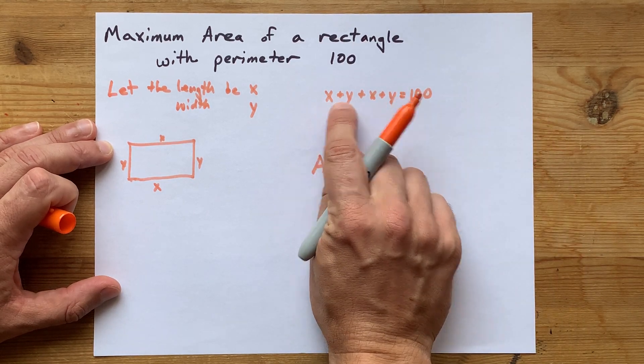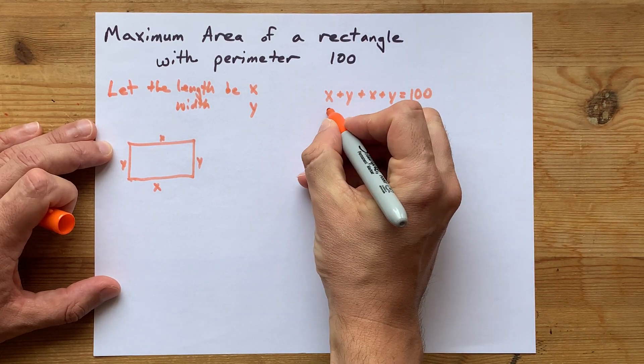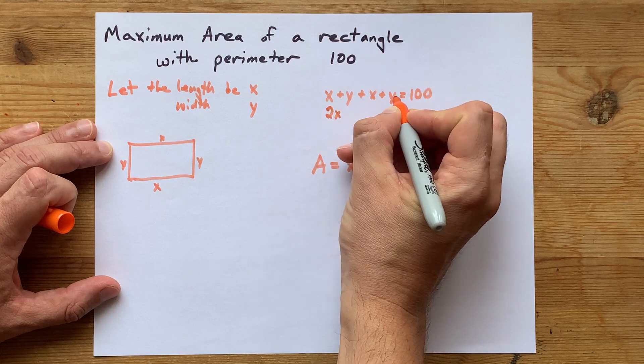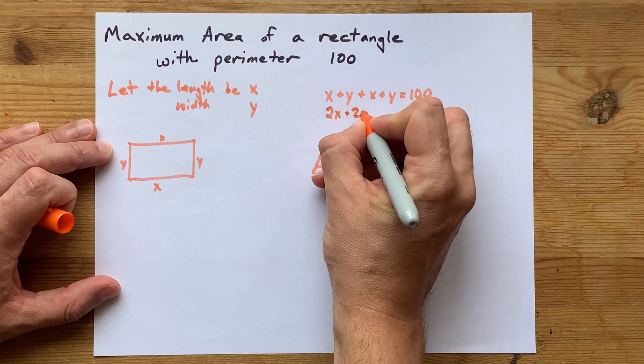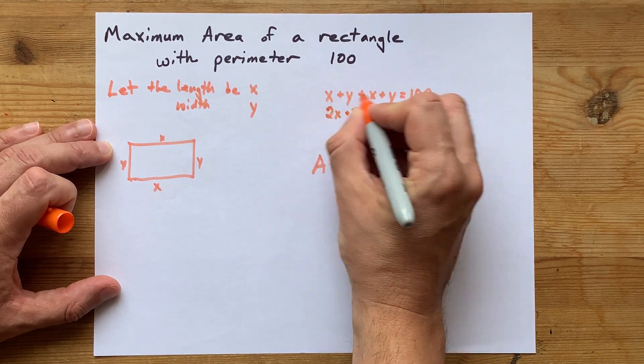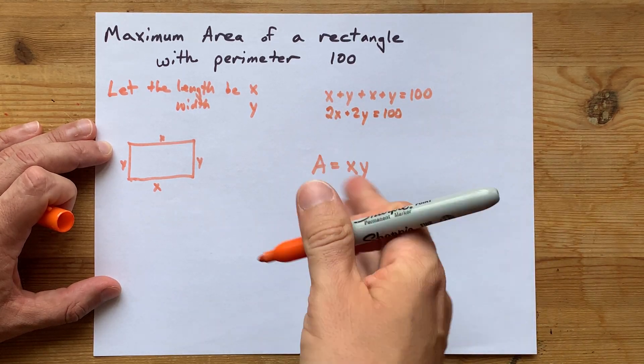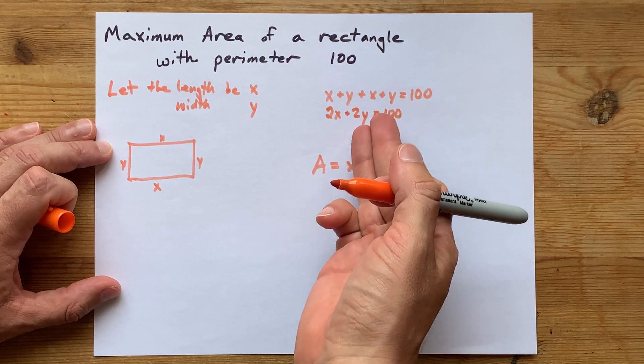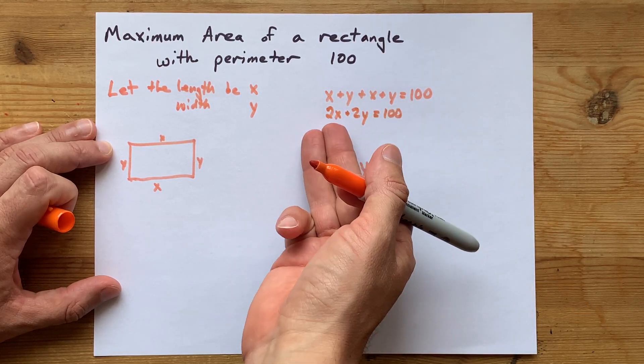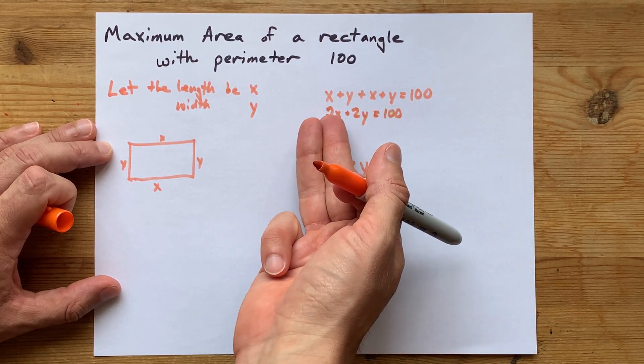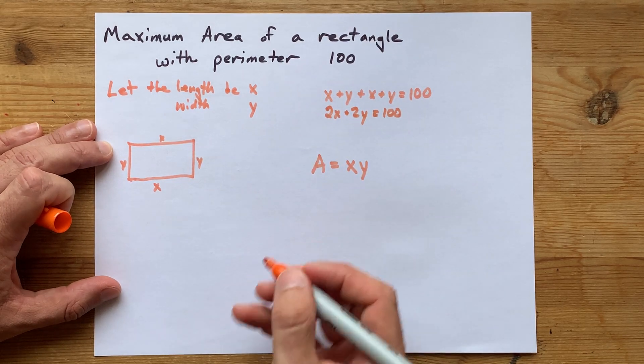I'll help you. So, x plus x is 2x. y plus y is 2y. That, on the left, still equals 100. Now, I'm going to move things over to the right-hand side to try to get y alone. I'm going to move the 2x to the other side. Currently, it's positive 2x here. So, on the other side of the equation, it's going to be minus 2x.